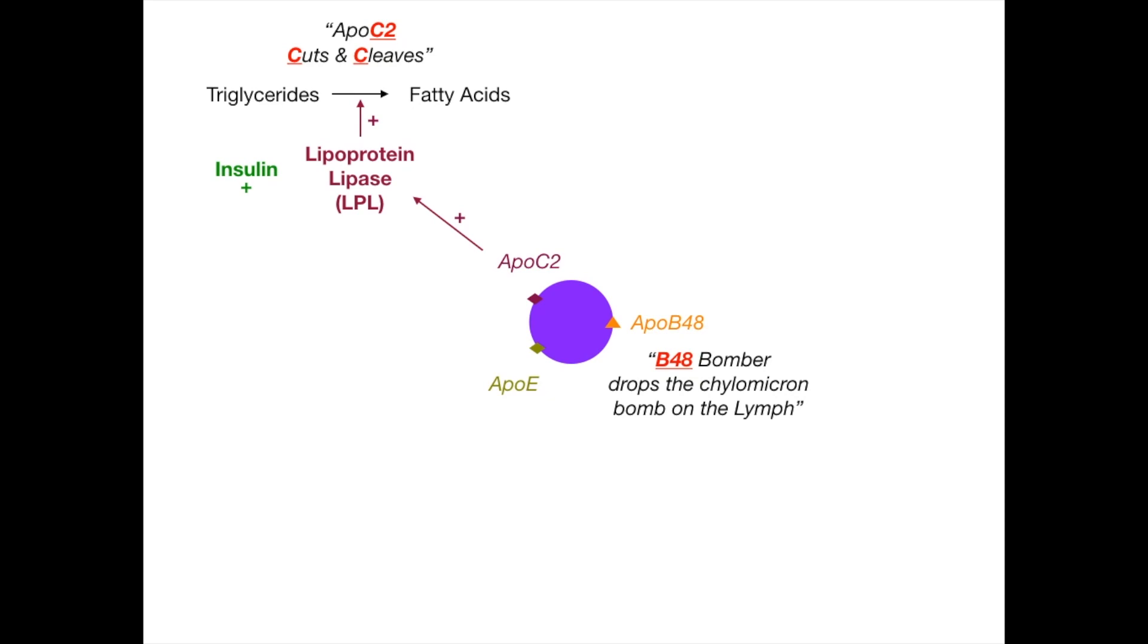Apo B48, the B48 bomber that drops the chylomicron bomb. So again, Apo B48 mediates the secretion of the chylomicrons from the intestine into the lymphatic system. Apo C2 turns on lipoprotein lipase, which hydrolyzes and cuts triglycerides into fatty acids to be absorbed by the body.